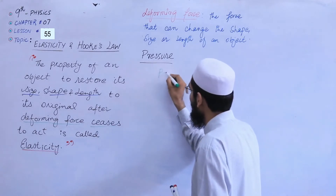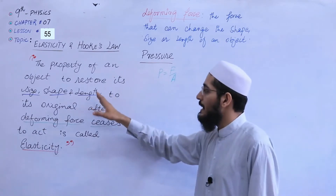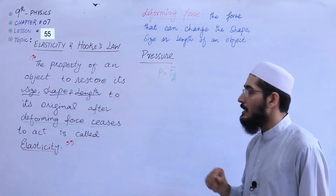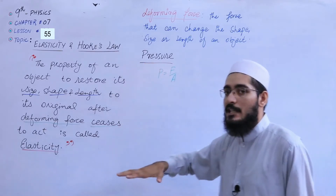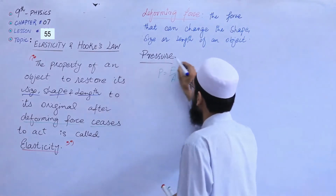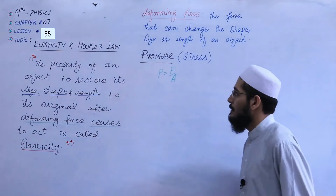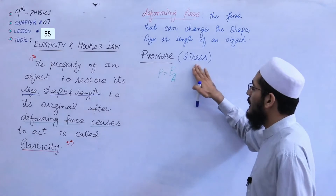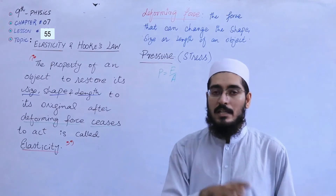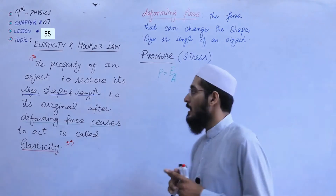Force per unit area is equal to force per unit area. For example, if I change the size, shape, or length by applying force — and force is over unit area — so students, we normally name it pressure. But in this condition, we change the name: pressure here is called stress.